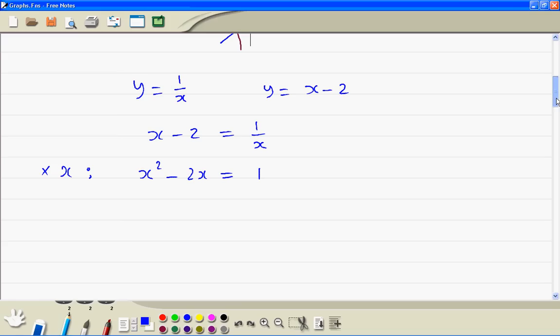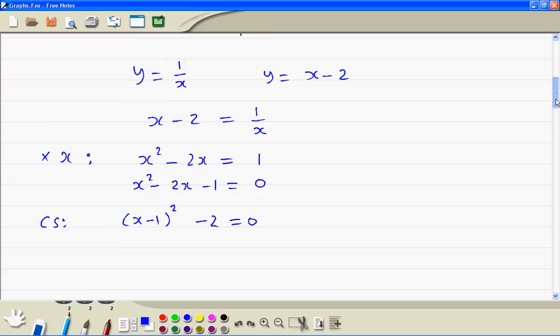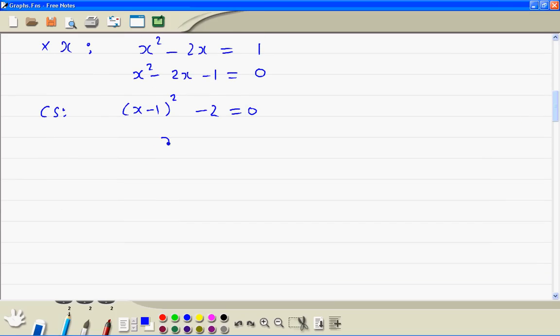To solve it, if we take one to the other side, we cannot factorize this, so we have to complete the square. So this is x minus 1 all squared, minus 1 minus 1 will give us minus 2. Then we take this minus 2 to the other side. So we have x minus 1 all squared on this side, and this is equal to 2.